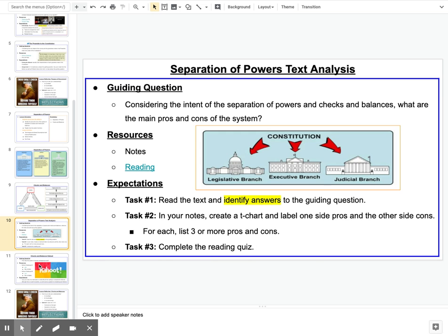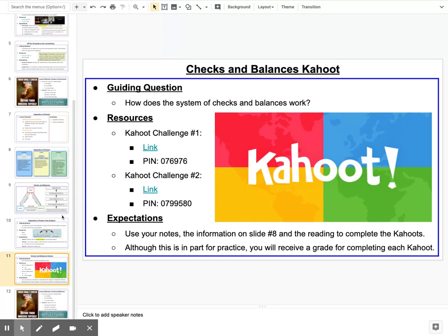So on to the final major activity here. What I want you to do is two Kahoots. And what I'm looking for you to do is to be able to answer this question, basically, how does the system of checks and balances work? So two different Kahoots here, two different challenges. So take your time with these. If you can play these with friends or at least another person, that's great to get a little competition discussion involved in all this.